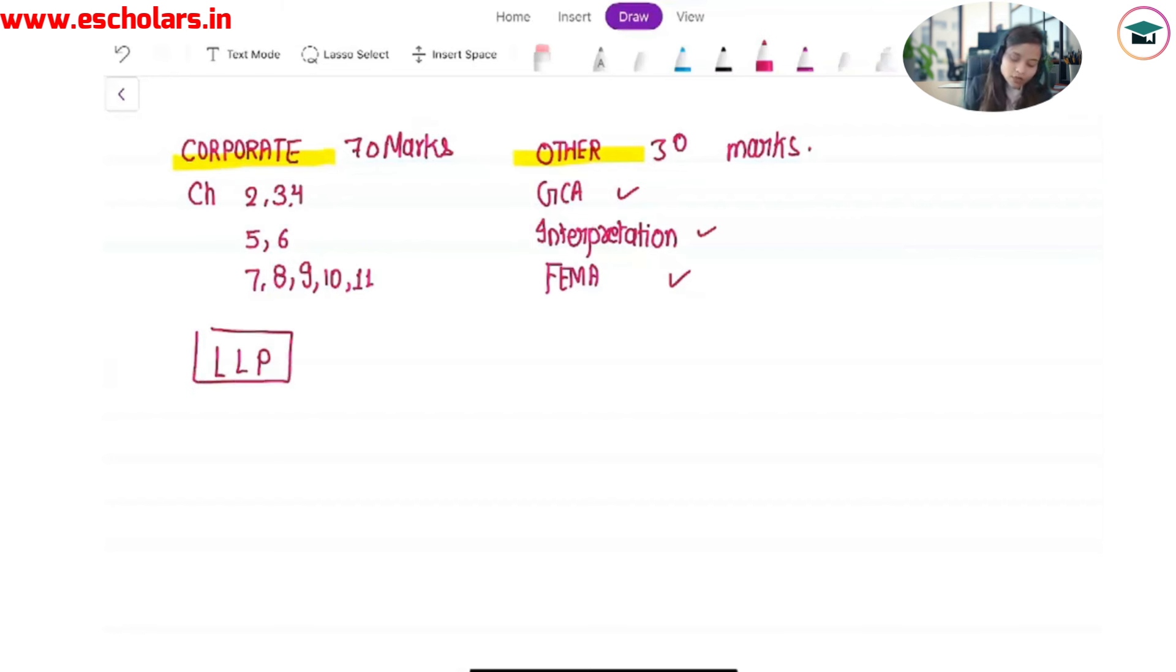LLP is a newly added chapter which is again a very important chapter for us. If I combine these 4 chapters, your passing percentage will be complete. 40% weightage - other law and LLP - only 4 chapters cover. The rest of the 11 chapters in company law carry the weightage of 58 marks approximately.